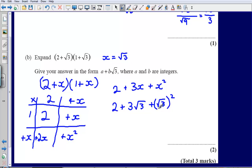Now if I square a square root, that undoes the square root. So what I end up with is 2 plus 3 root 3, plus, and squaring a square root undoes the square root, so plus 3.